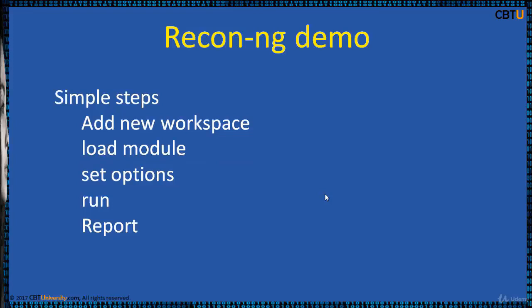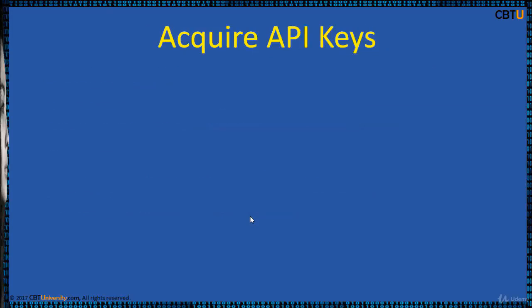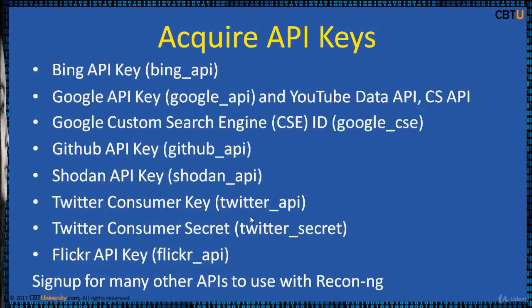The simple steps in ReconNG are: add a new workspace, load a module, set options, run, and generate a report. The entire framework is scriptable through the use of a resource file. A resource file is a plain text file containing a list of commands for the framework. Referencing the resource file for execution is like this — we are going to take a demo on this soon.